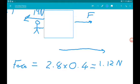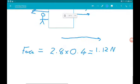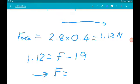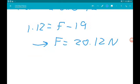So that means the resultant force experienced by the box is 1.12 newtons. So 1.12 is equal to f minus 19, therefore f is 20.12 newtons, although we usually go to three sig figs so 20.1 newtons.